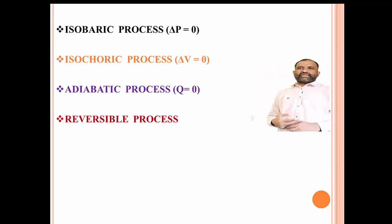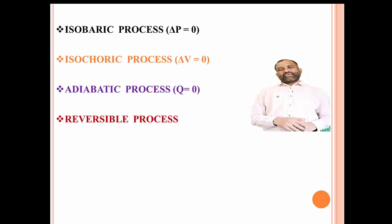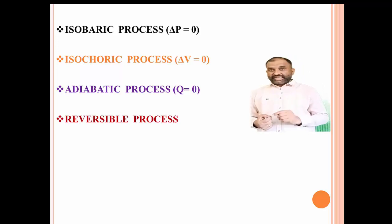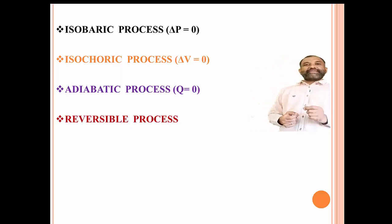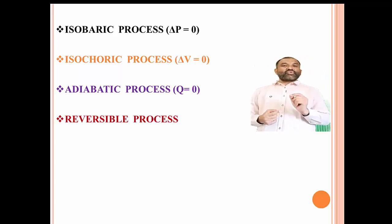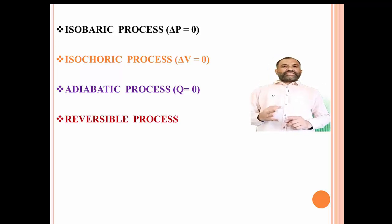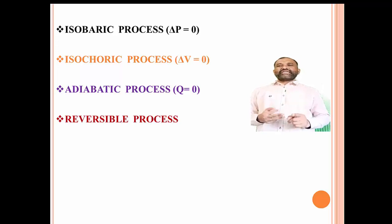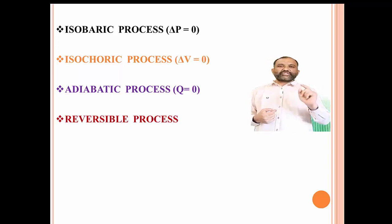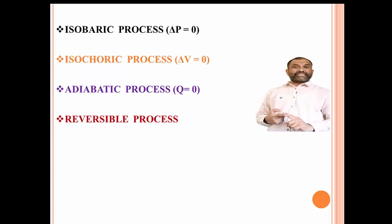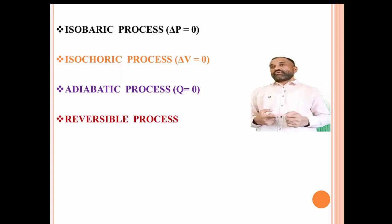The second type of process is the isobaric process. Iso means same and bar refers to pressure. The process which is carried out at the same pressure, that is constant pressure, is known as an isobaric process. For this process, initial pressure P1 equals final pressure P2, and hence the change in pressure delta P — which equals P2 minus P1 — is also equal to zero. Hence, for an isobaric process, delta P equals zero.